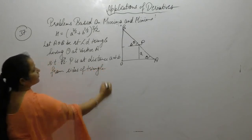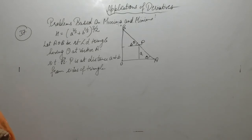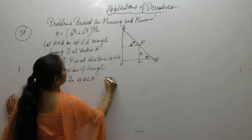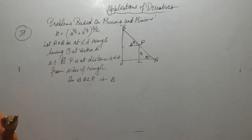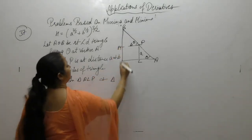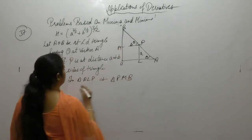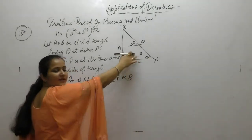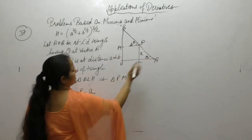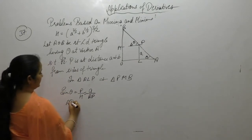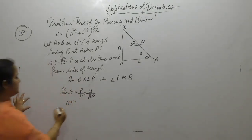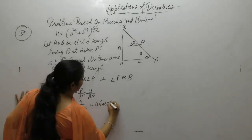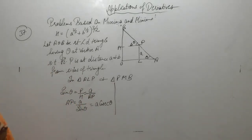In triangle ALP and triangle PMB, sin theta equals perpendicular upon hypotenuse. The perpendicular opposite to angle theta is AP. So we get AP equals A upon sin theta, and 1 upon sin is cosec theta.